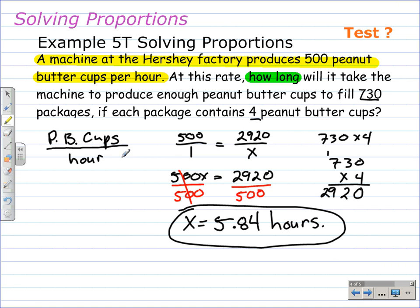Remember, it all starts off with this ratio right here: peanut butter cups per hour. We're given this ratio, 500 peanut butter cups made in one hour, and we have to set up the other side. So we had to figure out how many peanut butter cups we actually needed. Remember, it's not just 730, it's 730 times four because there's 730 packages with four peanut butter cups in each packet. So we have to multiply 730 and four to get how many peanut butter cups we actually needed. A lot of students make the mistake of putting in 730 instead of multiplying these two numbers first.